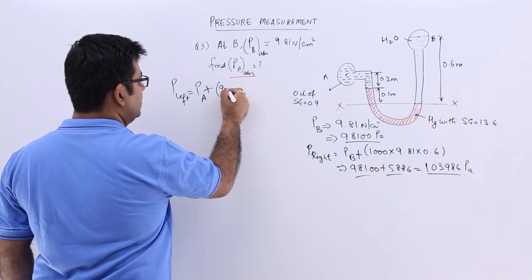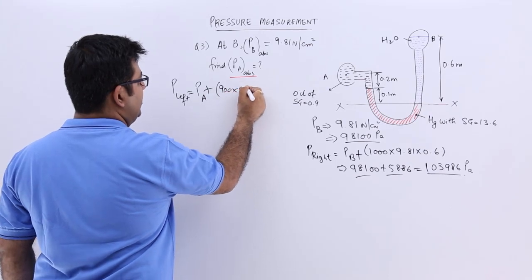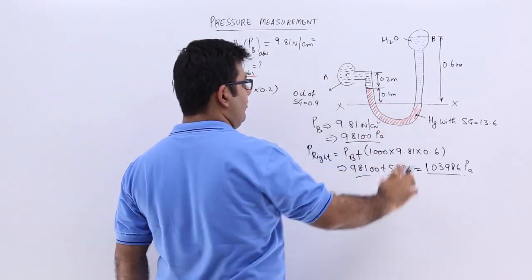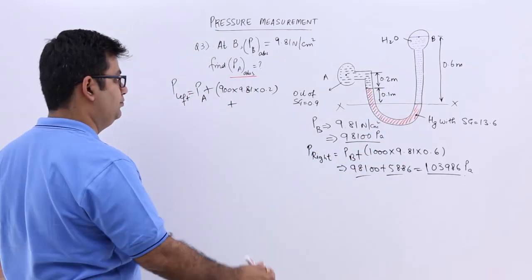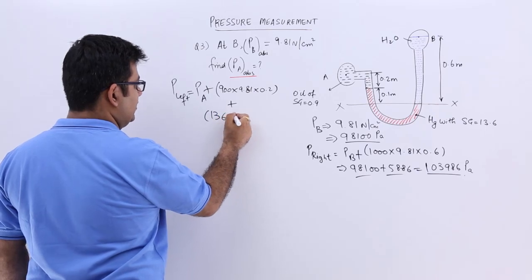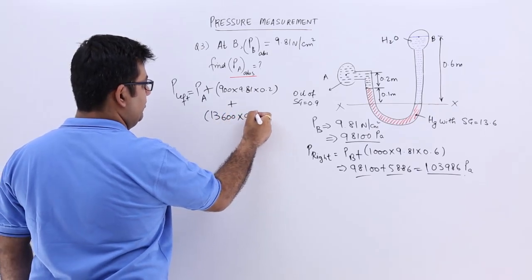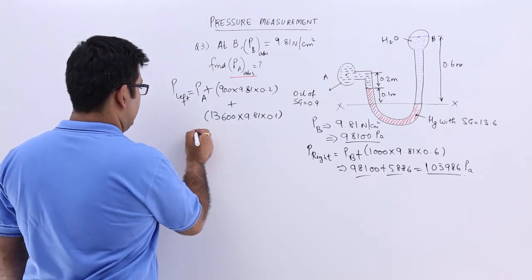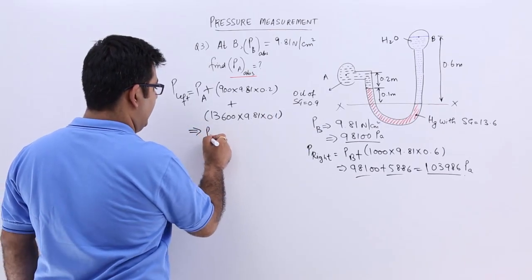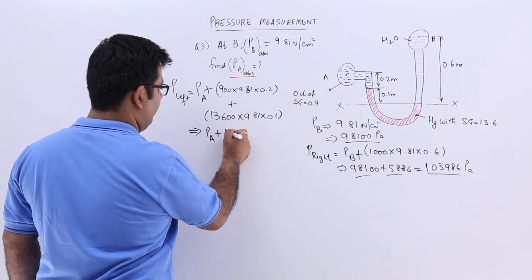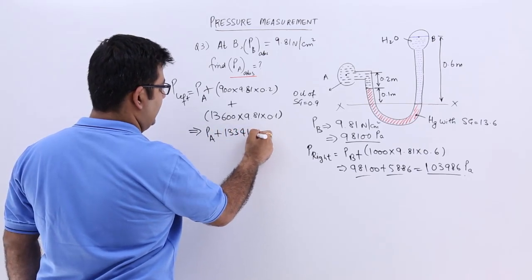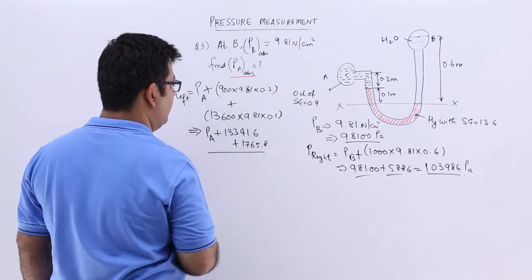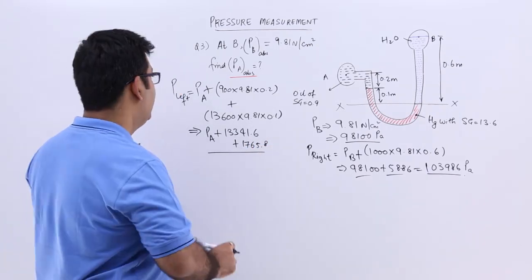the density will be 900 into 9.81 into 0.2 plus the 0.1 meter height of mercury column. And the density will be 13600 into 9.81 into 0.1. So when you solve that, you get PA plus 13341.6 plus 1765.8.